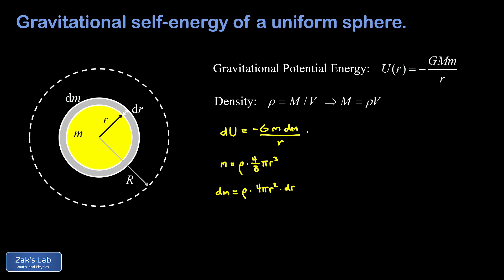So now we can plug all this stuff into our expression for dU. We have negative G times little m, but little m was rho times four thirds pi r cubed times dm. But dm has another factor of rho and a four pi r squared dr. In our denominator, we just have an r. So we're going to make an effort to clean this thing up a little. I can cancel one factor of r from the r cubed and turn that into an r squared.